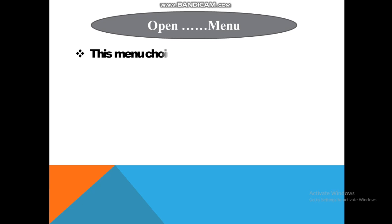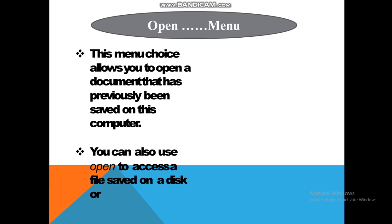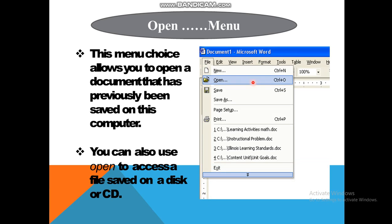Now we will see the Open menu. This menu choice allows you to open a document that has previously been saved on this computer. You can also use Open to access a file saved on a disk or CD. दूसरा option है Open — File click करके दूसरा option आता है Open, मतलब खोलना। जो आपने previously कोई document लिखा है और save किया है, वो खोल सकते हैं। इसकी shortcut key है Control + O — keyboard से Control + O press करने पर document open हो जाएगा।